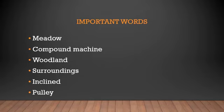The important words for this lesson are meadow, M-E-A-D-O-W. Meadows, it is nothing but small grasslands where we graze the cattle. Compound machine, compound machine is a machine which is a combination of two or more simple machines. C-O-M-P-O-U-N-D-M-A-C-H-I-N-E, compound machine. Woodland, W-O-O-D-L-A-N-D, woodland. The area with a dense growth of trees. Surroundings, S-U-R-R-O-U-N-D-I-N-G-S. Surroundings, natural and man-made things, objects make our surroundings. Inclined, I-N-C-L-I-N-E-D, inclined. P-U-L-L-E-Y, pulley. These are the most important words that you need to keep in your mind.